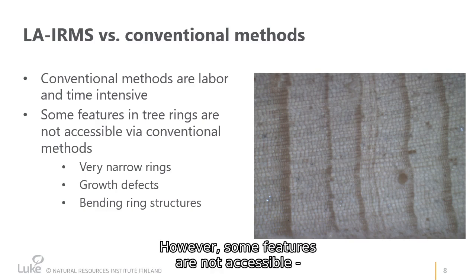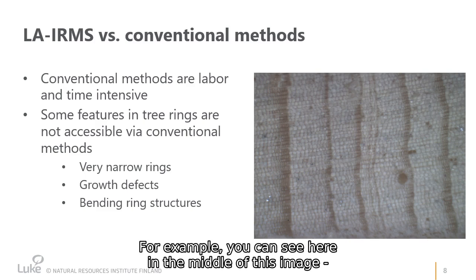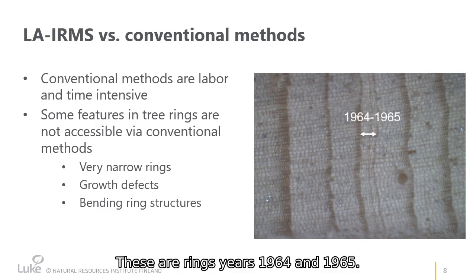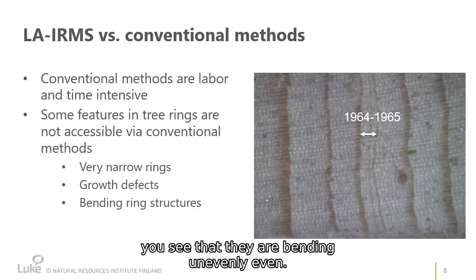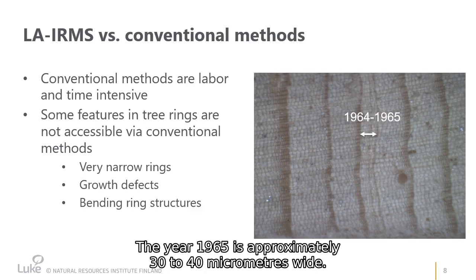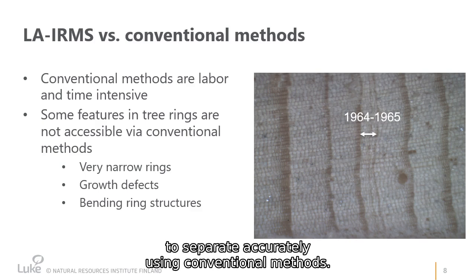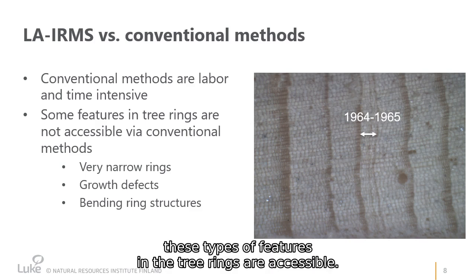However, some features are not accessible to conventional methods. For example, you can see here two quite narrow rings — years 1964 and 1965. When you look at these ring boundaries, you see that they are bending unevenly. The year 1965 is approximately 30 to 40 micrometers wide. You can imagine that this is impossible to separate accurately using conventional methods. By using laser ablation, these types of features in the tree rings are accessible — you can actually analyze both of these rings relatively easily.